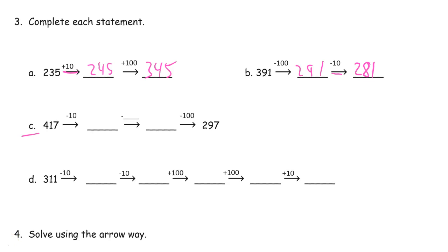On to number C. Or letter C. 417 minus 10. That's 407. And now I'm stuck. I don't know what to subtract because I don't know what I'm going to have left. So what I have to do is work backwards. 297. So this is 100 less than this one here. So what's 100 less? This is 100 less. So that means this one here has to be 100 more. So it had to be 397.